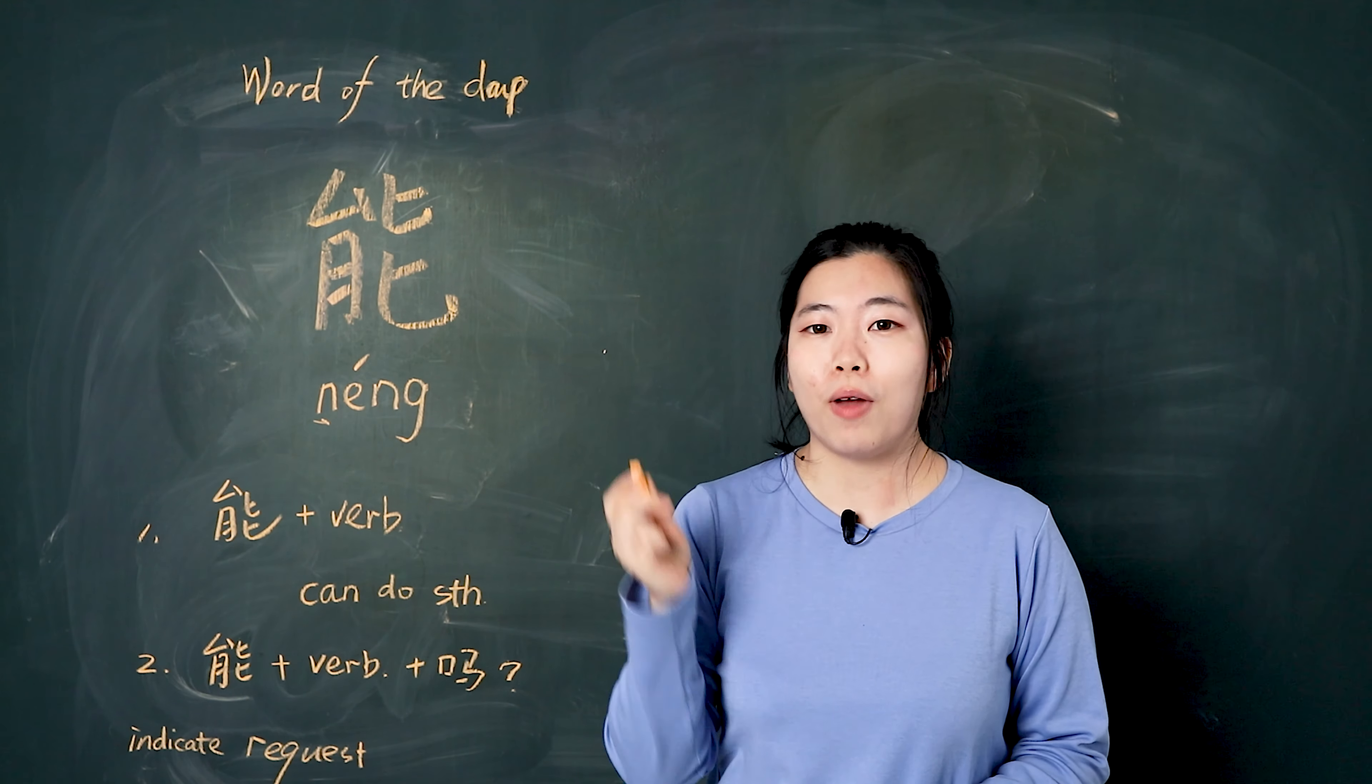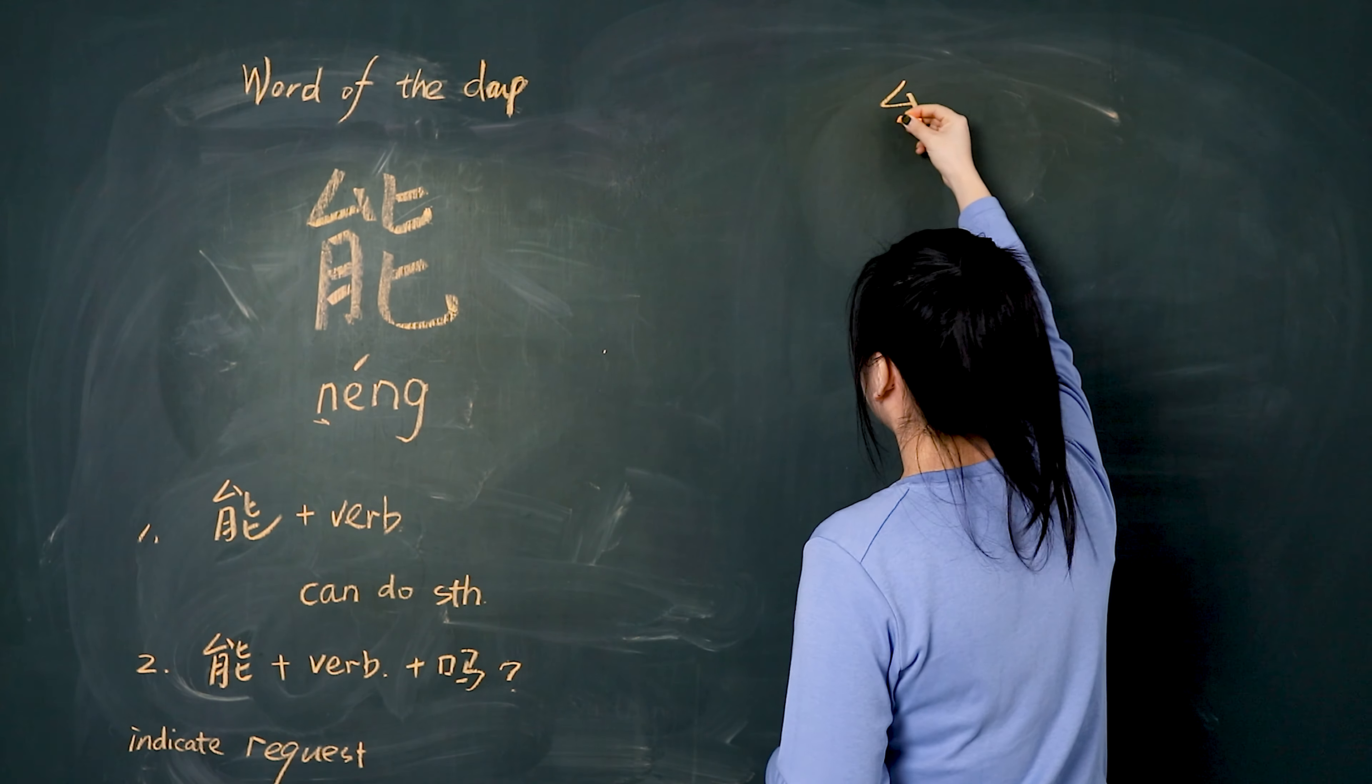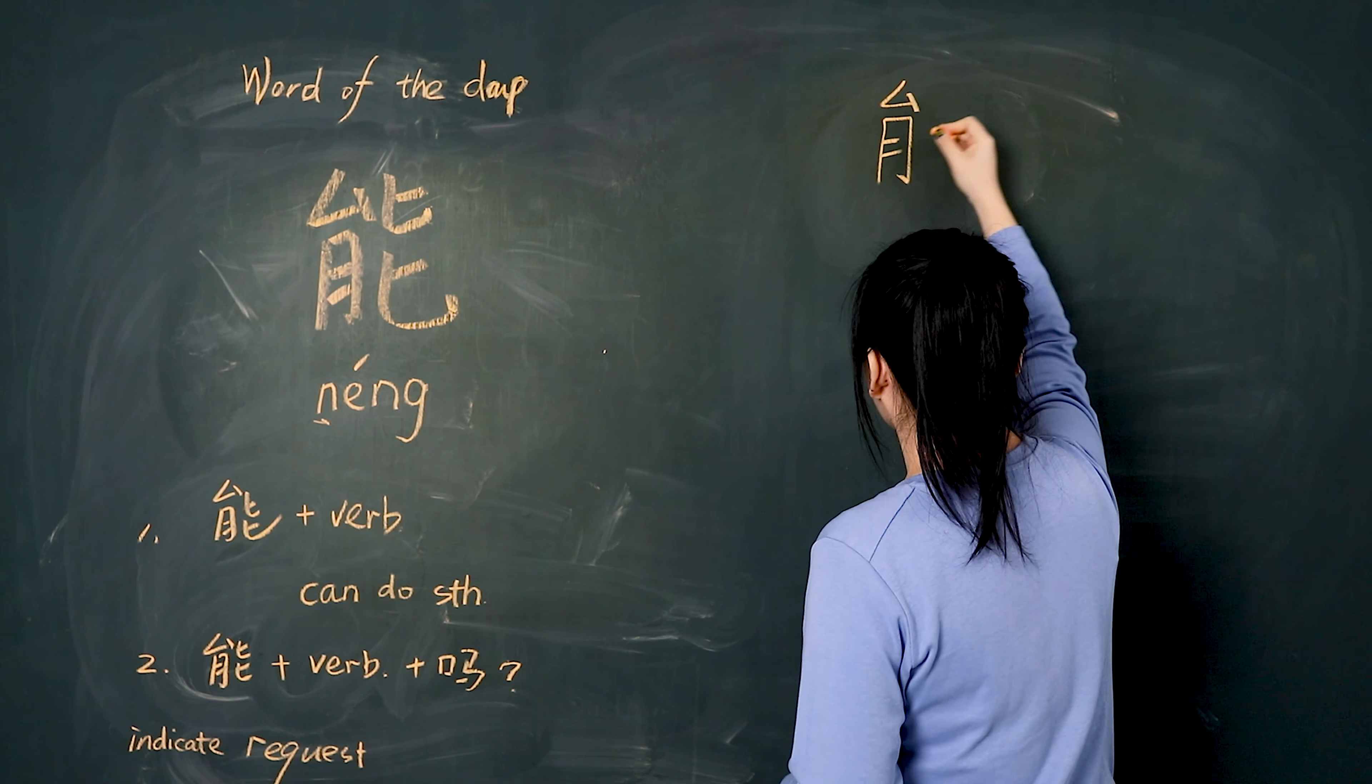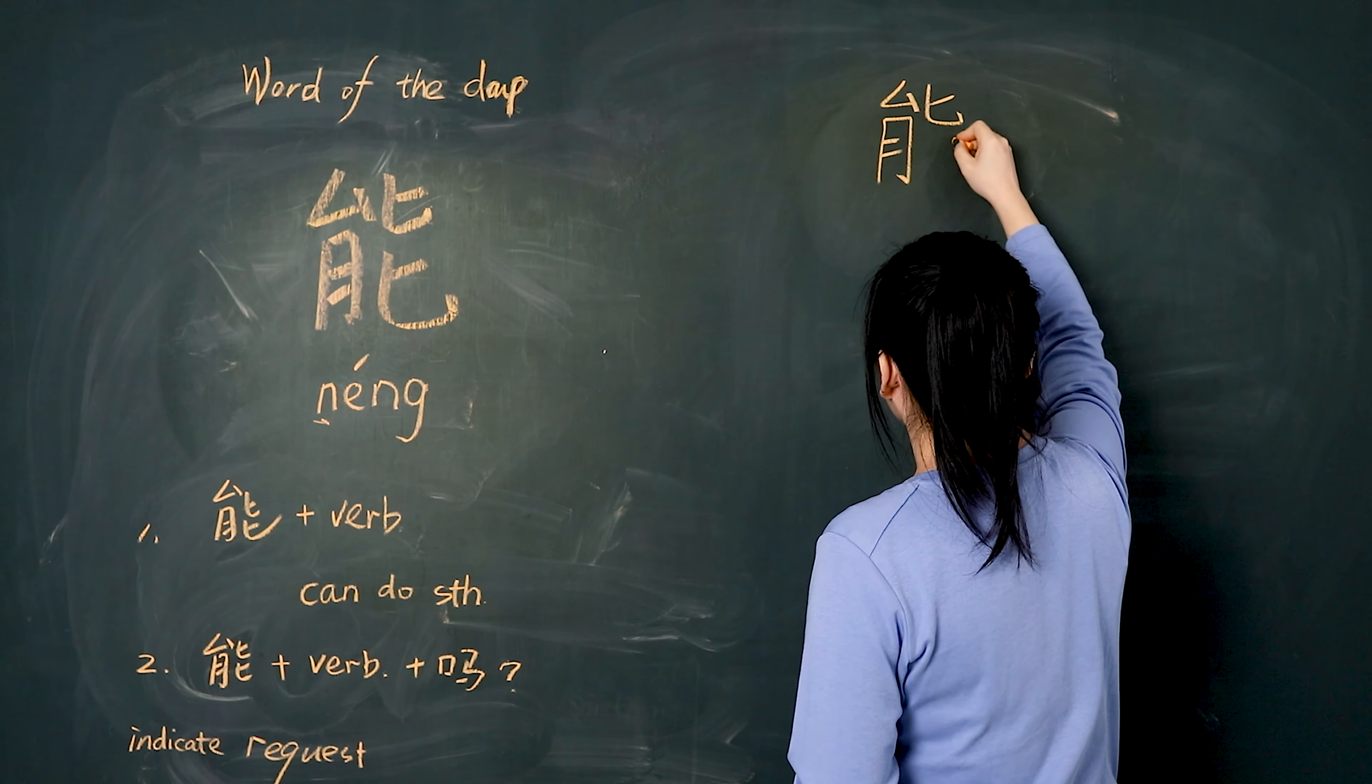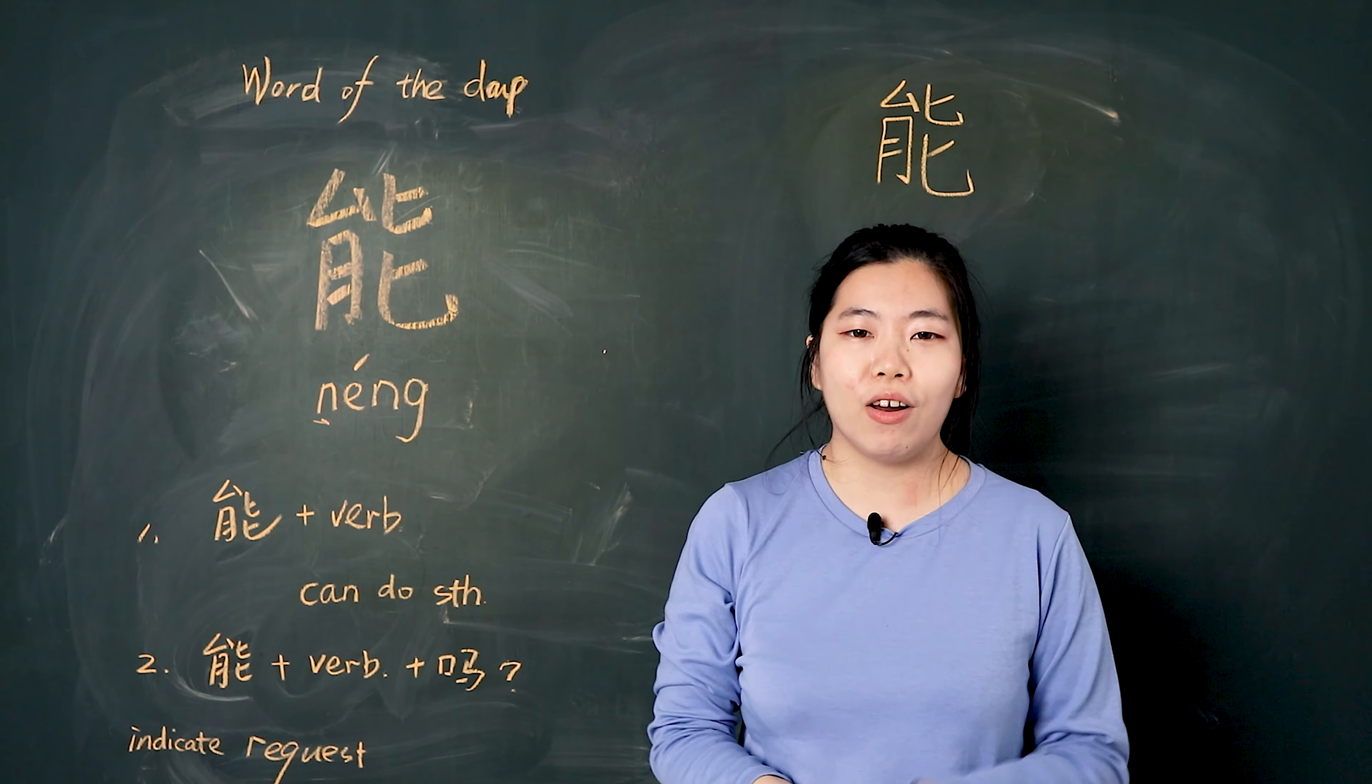Now, let's write together. 我们一起写。撇折 点 竖 横折勾 横 横 撇 竖弯钩. 能. Very good.